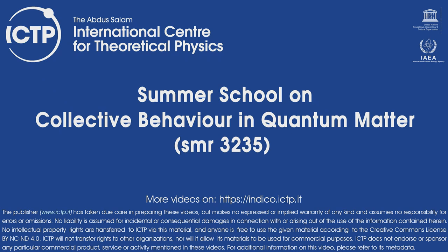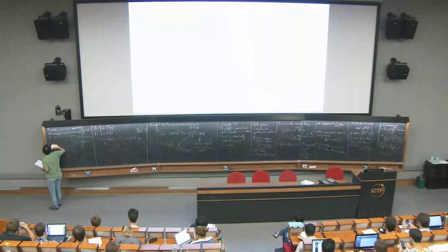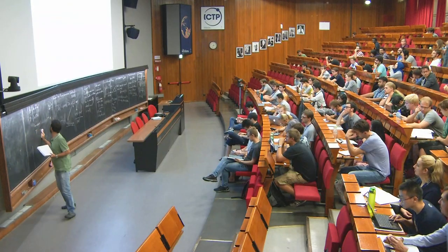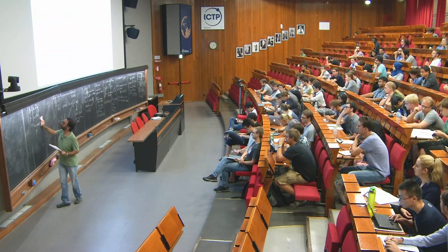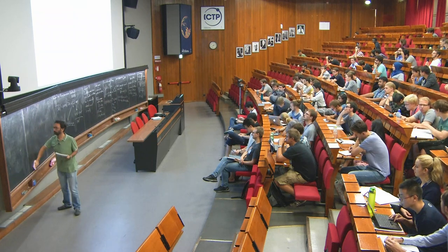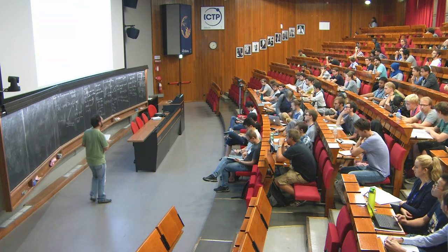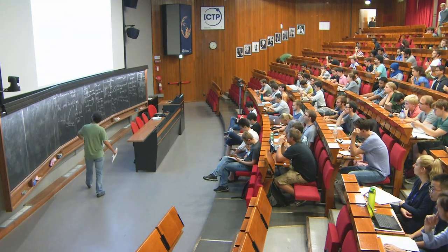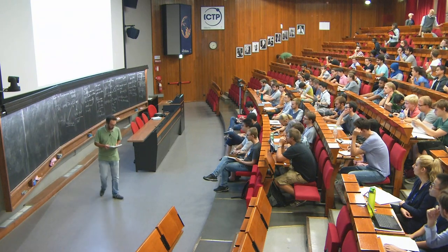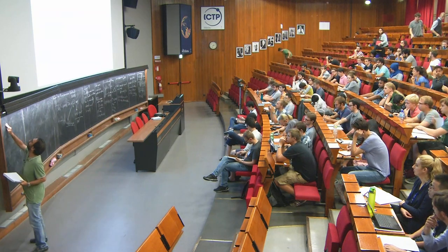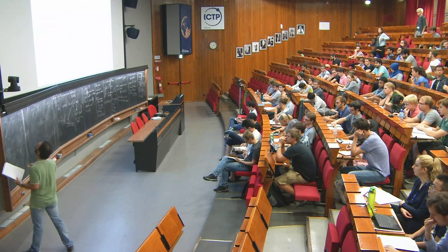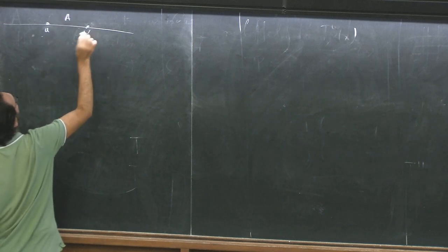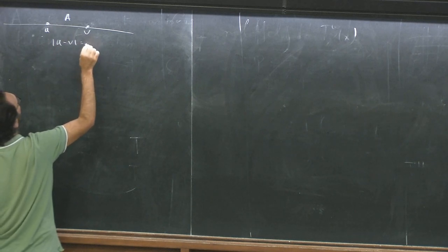Okay, let's start. As I promised before the break, I will show you how to calculate the entanglement entropy in conformal field theory by using this formula here. We are considering the entanglement entropy of one interval A between two points U and V, where the distance between U and V is equal to L.